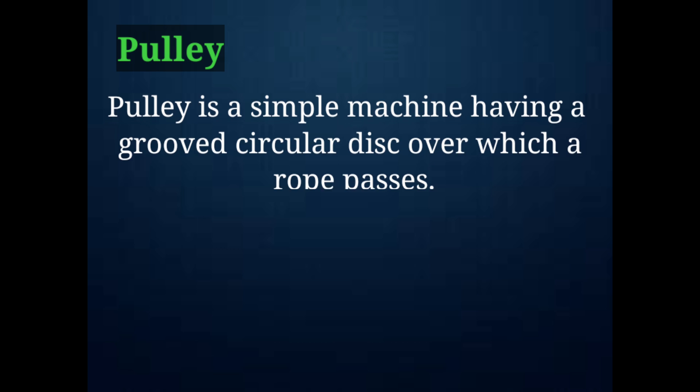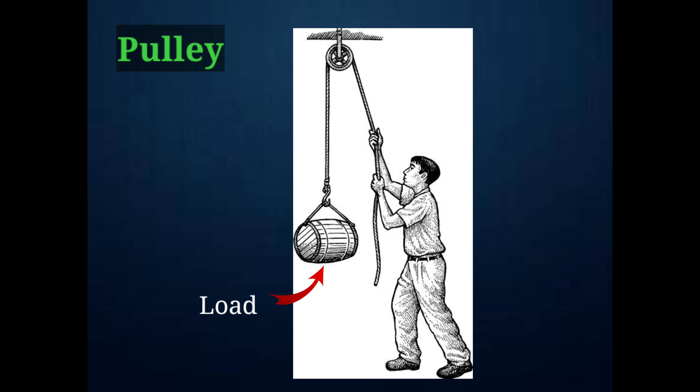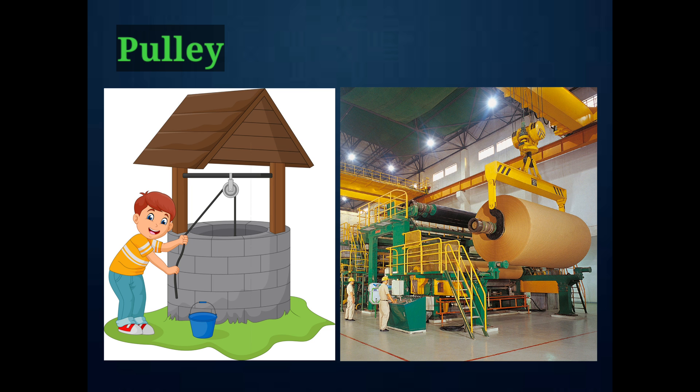Pulley is a simple machine having a grooved circular disc over which a rope passes. It consists of a circular disc with a groove and a rope. The load is attached to one end of the rope and effort is applied to another end of the rope. It helps us to multiply force and change the direction of force. Pulley is used to pull water from the well, lift heavy loads in factories, etc.